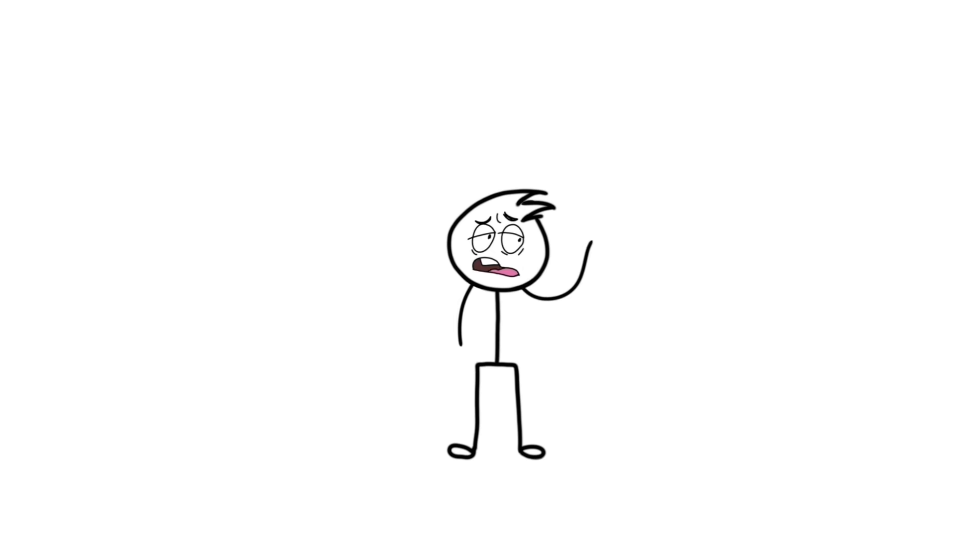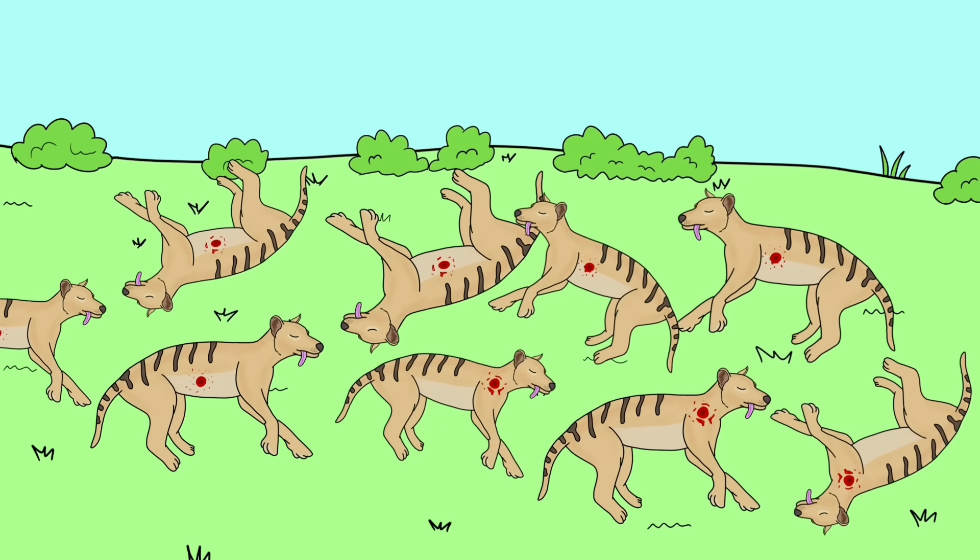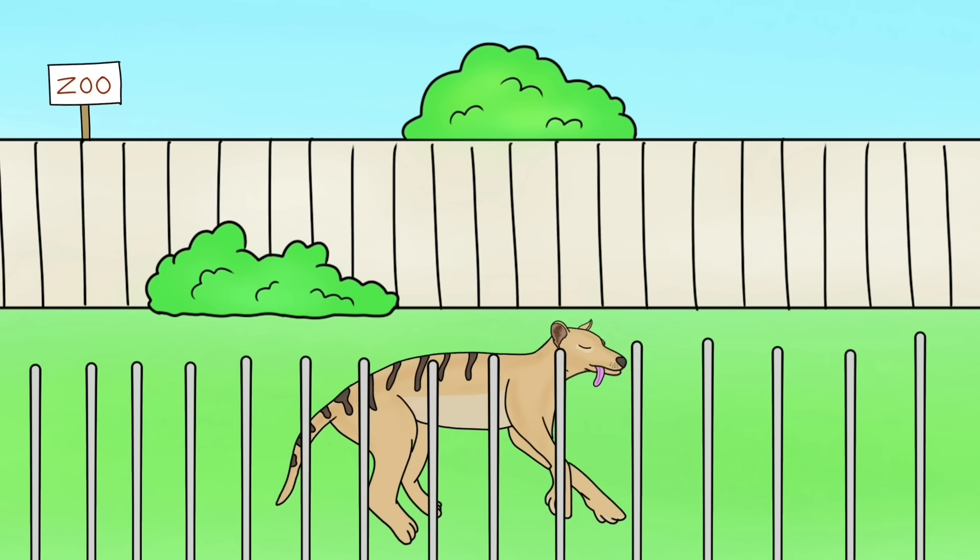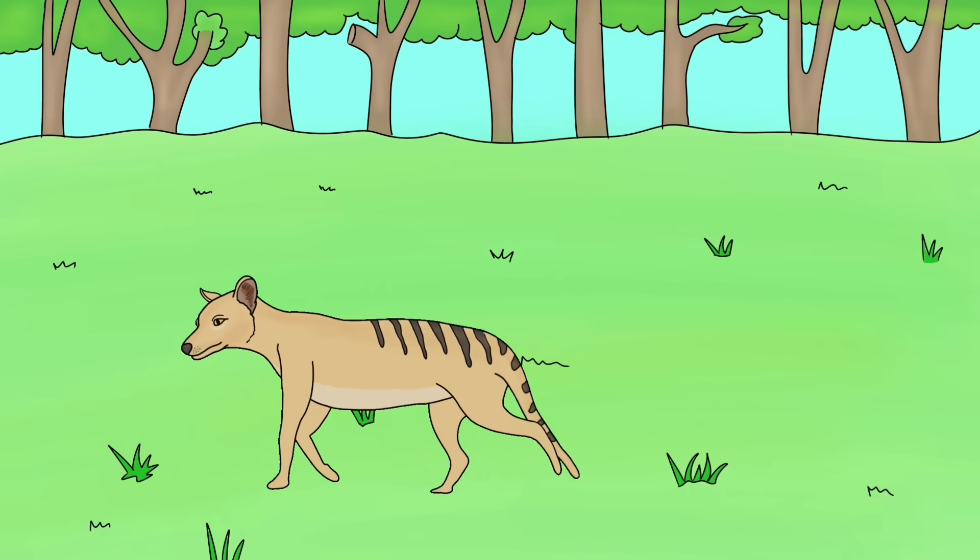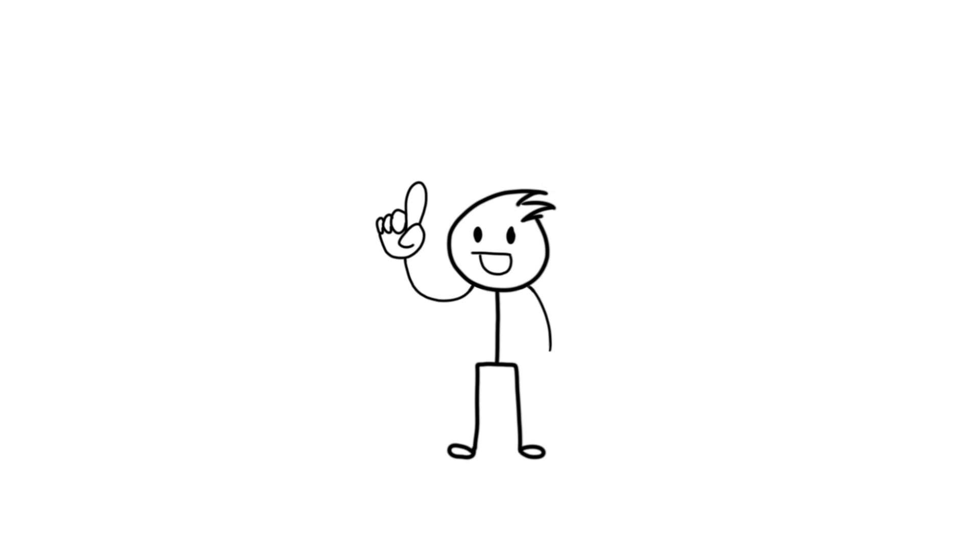By the time they realized that it was actually feral dogs that led to the loss of sheep, all the thylacines were wiped out, except for the one in a zoo. And that guy died in 1936, making the species extinct. But, many people have reported the sight of Tasmanian tigers, even today. We don't know if they are really extinct yet. Well, hope some are still surviving, far from the human sight.